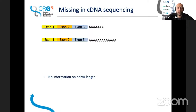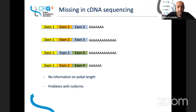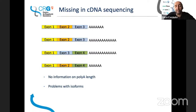We know that transcripts have a poly-A tail. The poly-A tail is usually not sequenced because it's very complex, and because we use a poly-dT adapter to do the retro-transcription step, so we lose this information. Then there are problems with isoforms. When you sequence small pieces of DNA, it's very complex to reconstruct the original transcripts. You may miss information about which isoform is expressed, so you have global information about gene expression but lose information about individual isoforms.